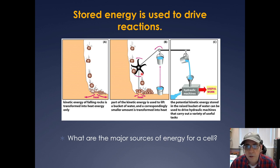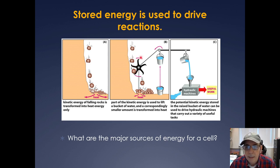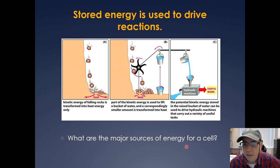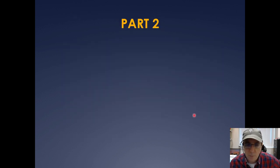Stored energy in a cell is used to drive reactions. An analogy from the textbook: a rock falling off a cliff dissipates energy as heat, but you can capture that falling rock — an energetically favorable reaction — to do useful work, like raising a bucket. Once the bucket is raised, you can use that in a hydraulic machine to create useful work. Kinetic energy can be stored within the cell and used for different processes. The major sources of energy in a cell will be covered at the start of part two.